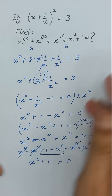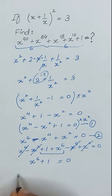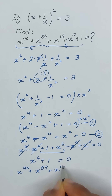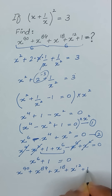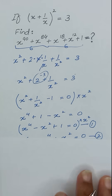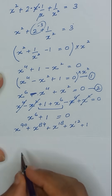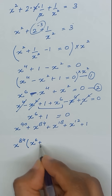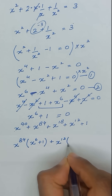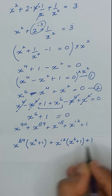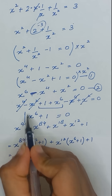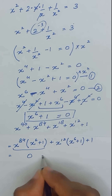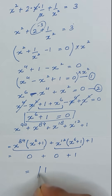Now we go back to the expression: x⁹⁰ plus x⁸⁴ plus x¹⁸ plus x¹² plus 1. From the first two terms, x⁸⁴ is common, giving x⁸⁴(x⁶ + 1), and from the next two terms, x¹² is common, giving x¹²(x⁶ + 1), plus 1. Since x⁶ plus 1 equals 0, both grouped terms become 0, so the answer is 0 plus 0 plus 1, which equals 1.